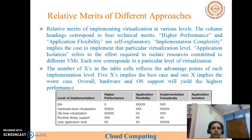Next are the relative metrics of different approaches — the merits of all virtualization implementation levels. The table covers four technical merits as column headings: high performance, application flexibility, implementation complexity, and application isolation, which refers to the effort required to isolate resources committed to different virtual machines.